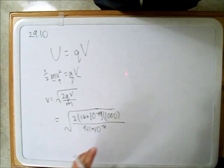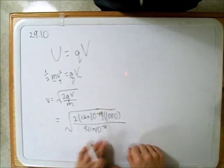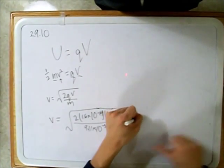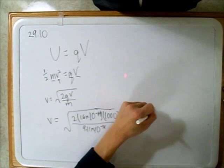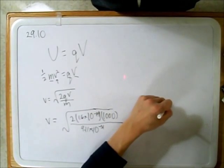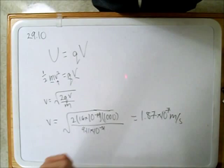We get our answer, which is 1.87 times 10 to the 7th meters per second. So we just plug that in here, and we see it.